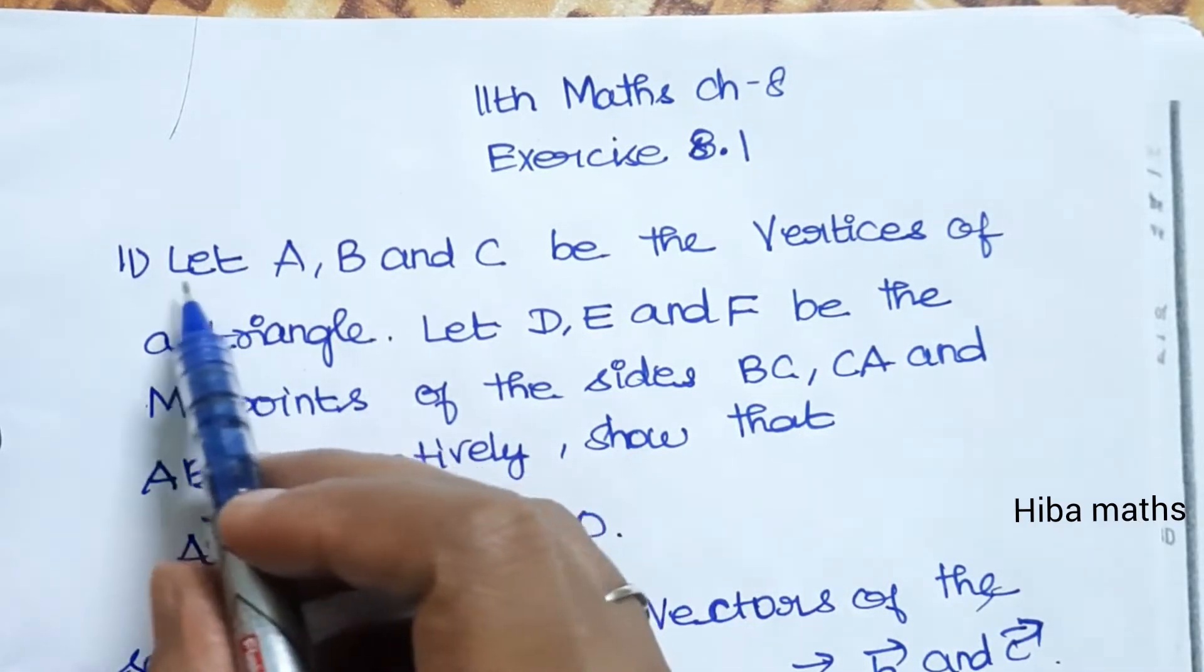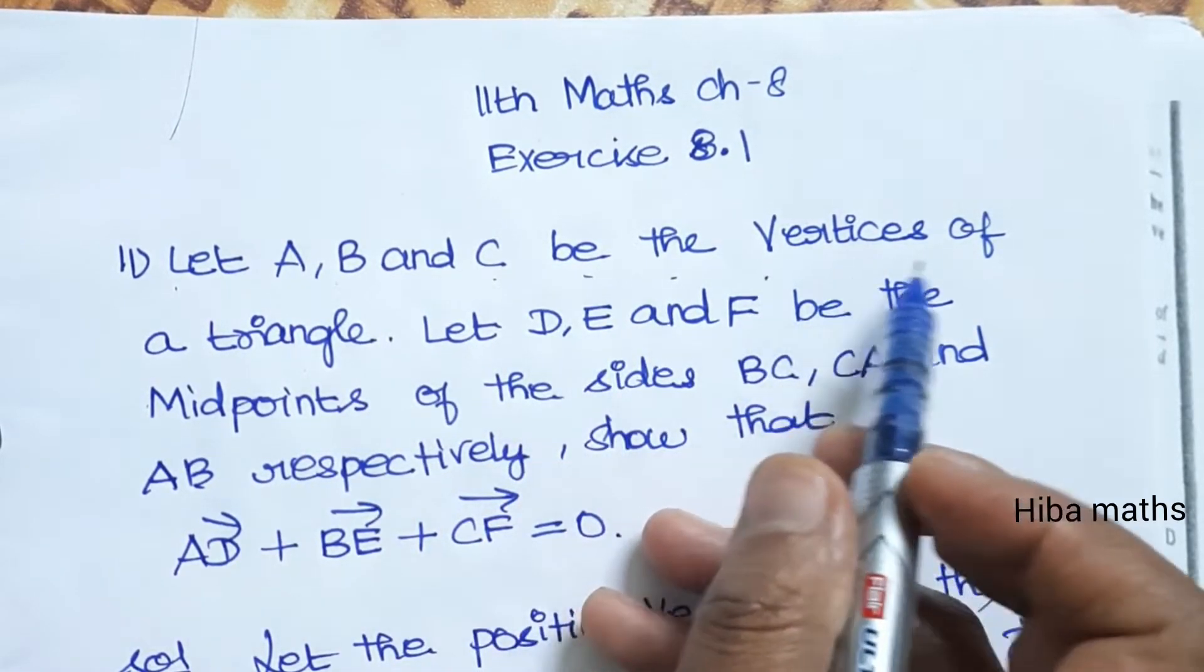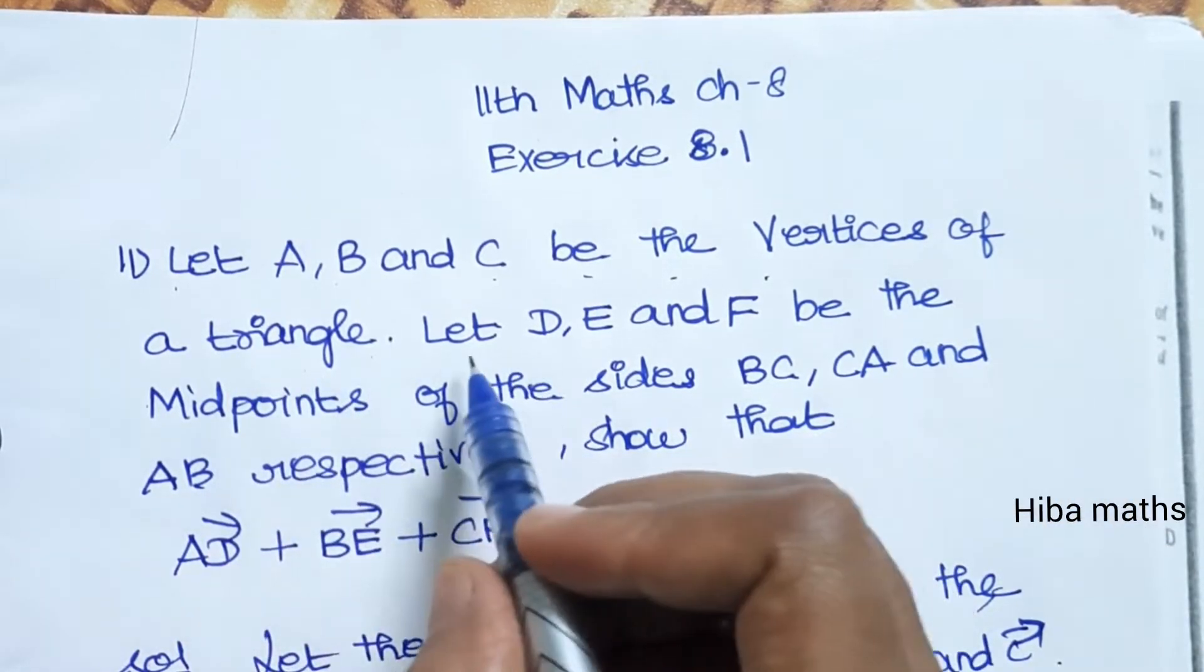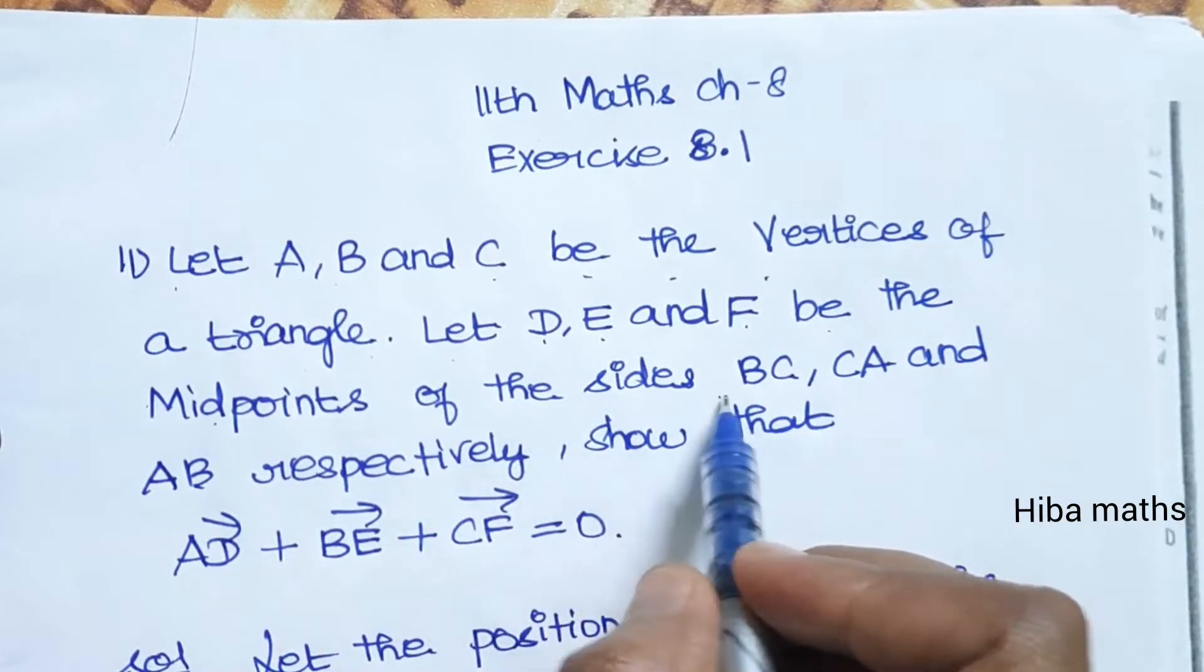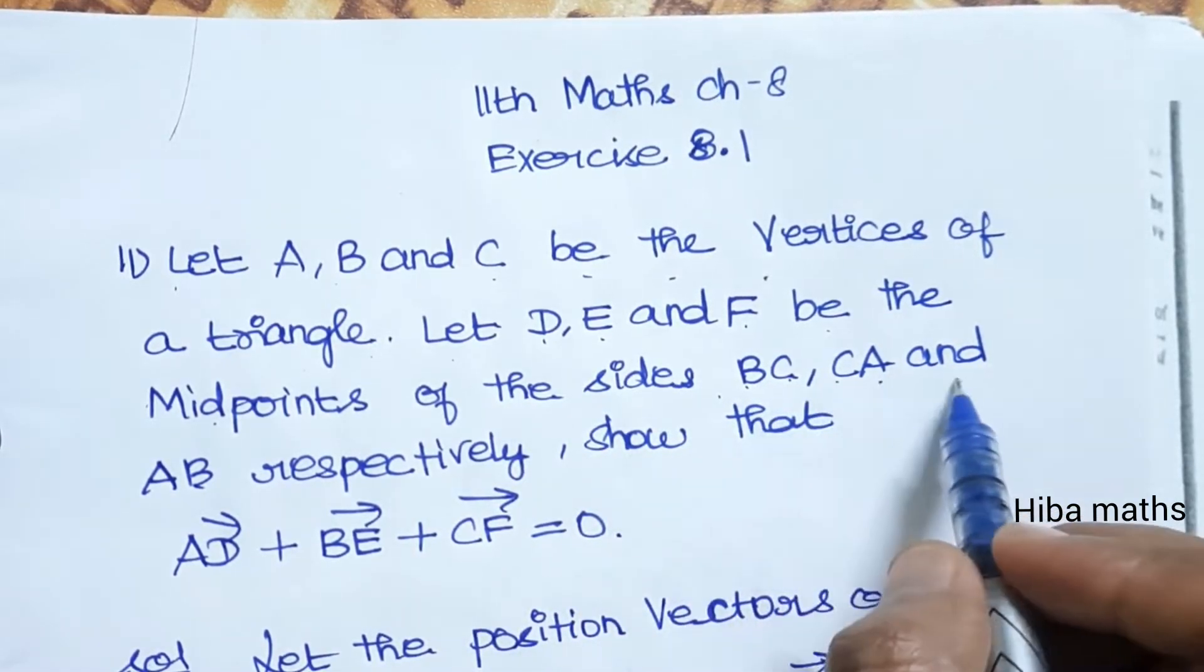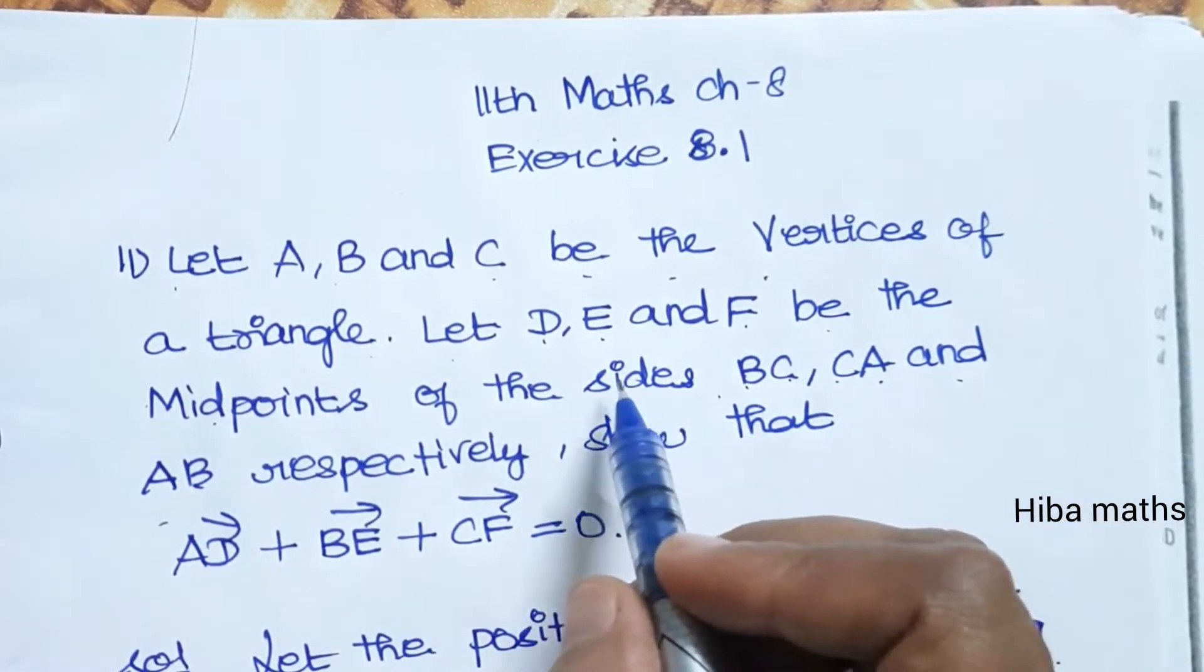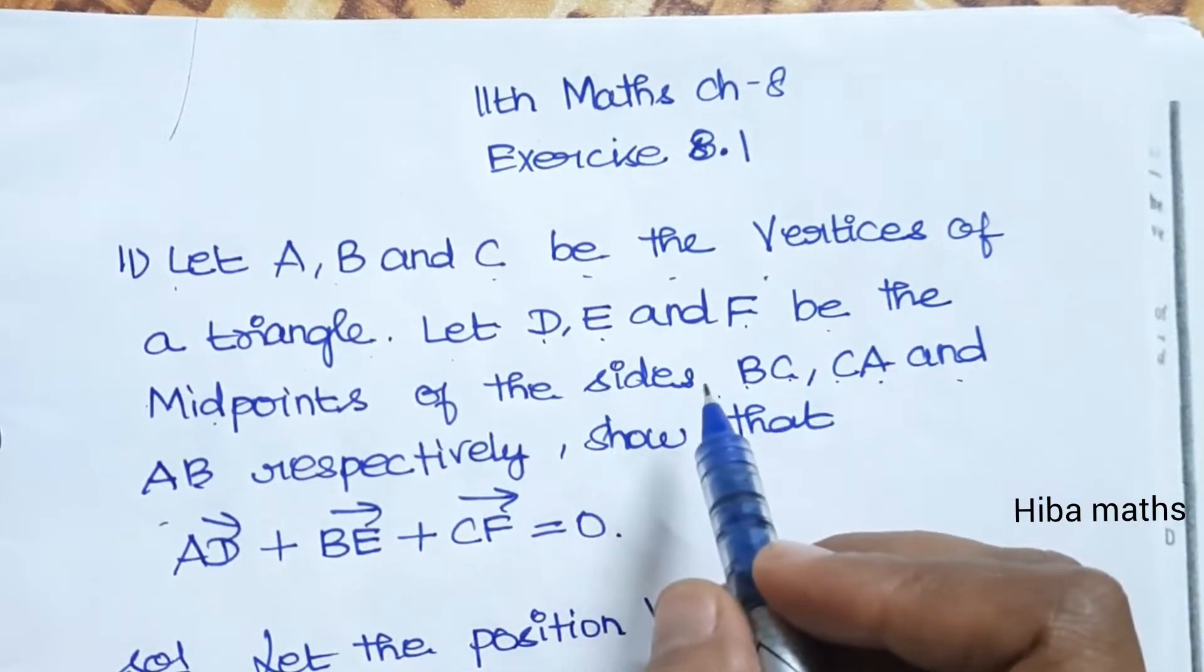11th question. Let A, B, C be the vertices of a triangle. Let D, E, F be the midpoints of the sides BC, CA, and AB respectively. So draw the diagram carefully.